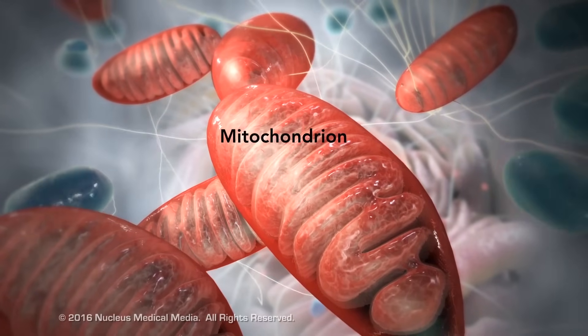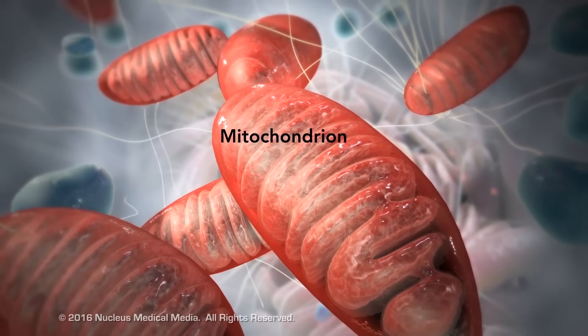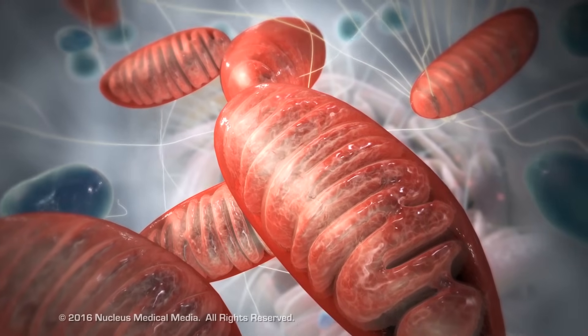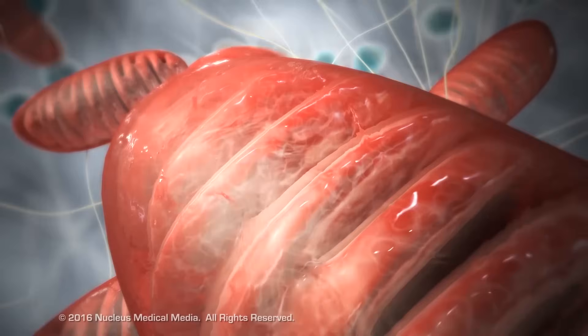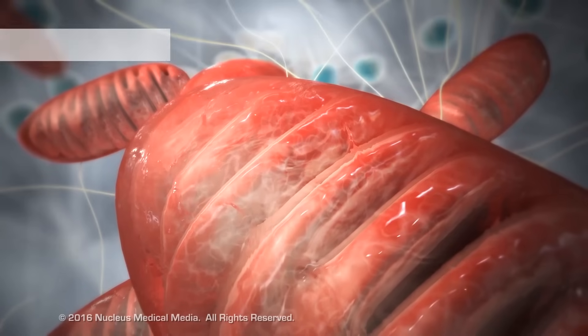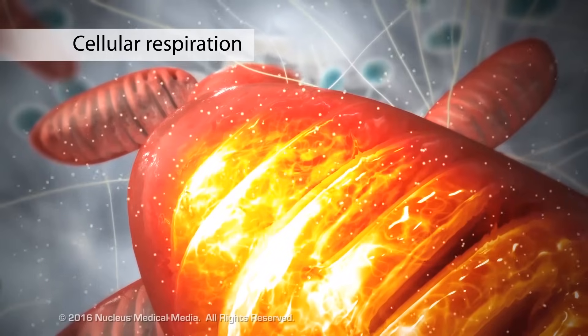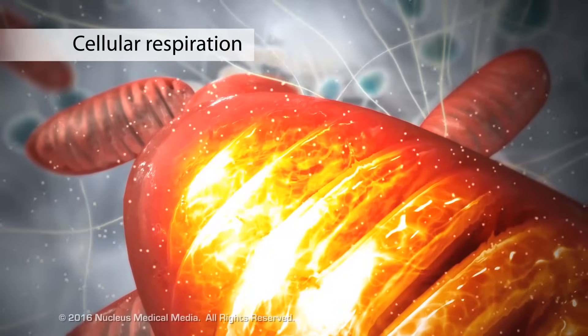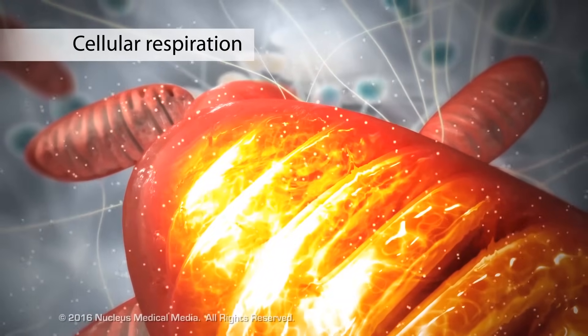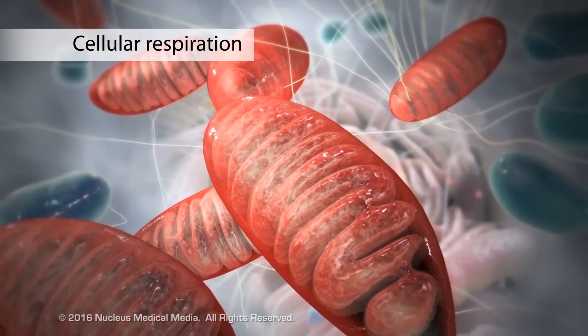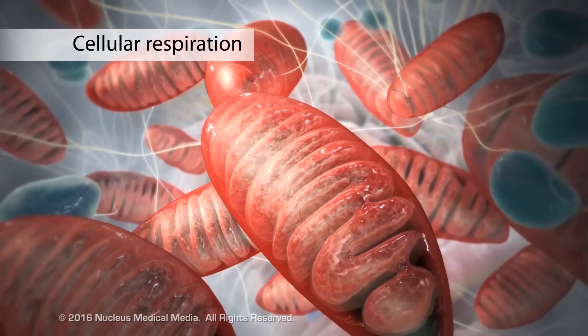The mitochondrion is an organelle that is the powerhouse for both animal and plant cells. During a process called cellular respiration, the mitochondria make ATP molecules that provide the energy for all of the cell's activities. Cells that need more energy have more mitochondria.